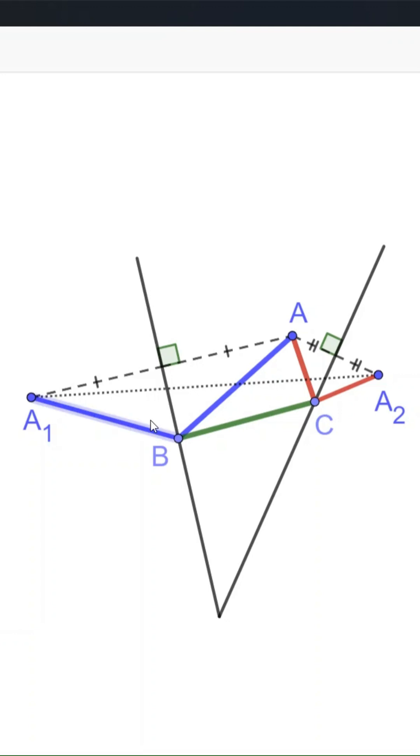The proof is simple. For arbitrary B and C, AB equals A1B and AC equals A2C because of the reflections.